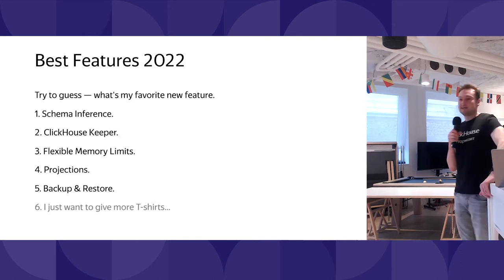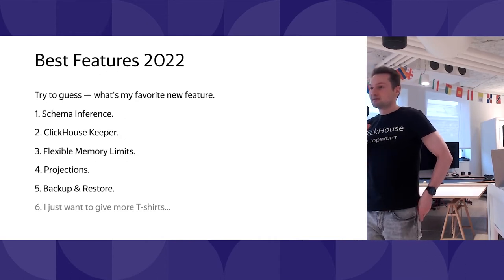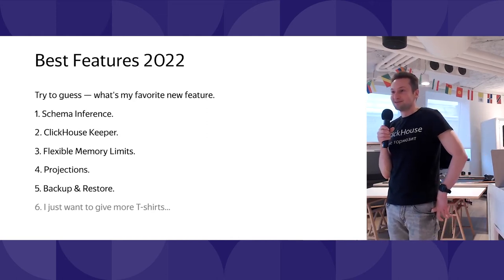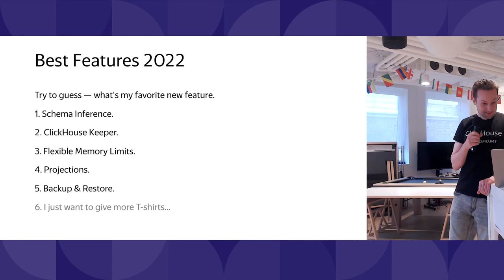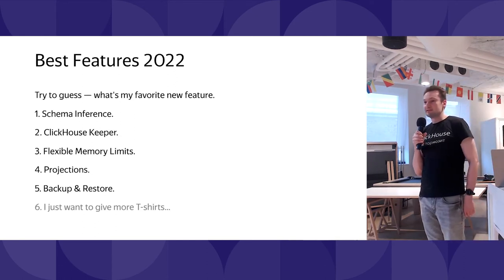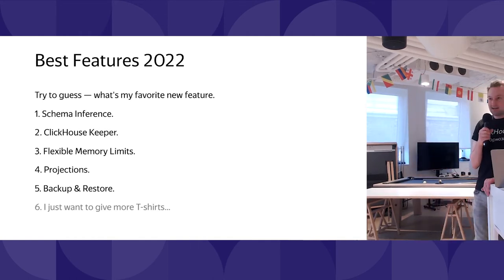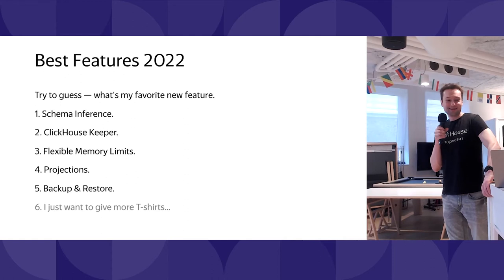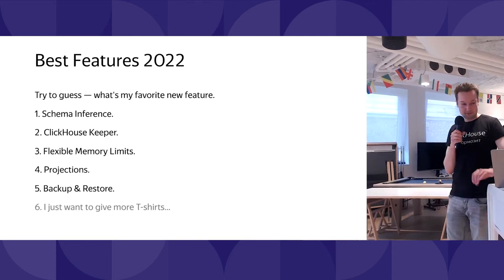So that's five features. Only one t-shirt was won. I want to give you more t-shirts of the right size. Can you guess another favorite feature? All these features are almost equally favorite for me, but this one is special — it is not only about software, it is also about hardware.